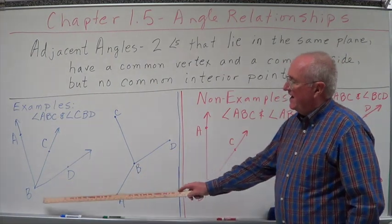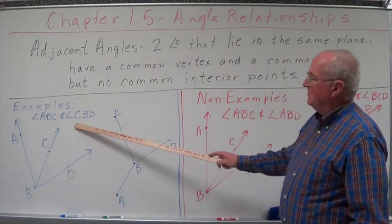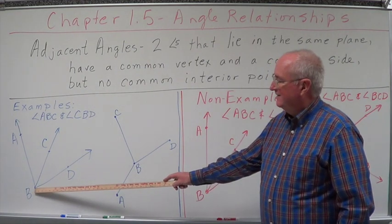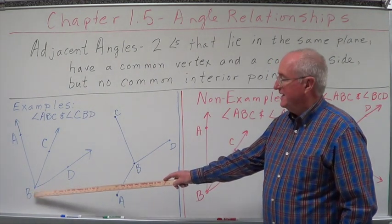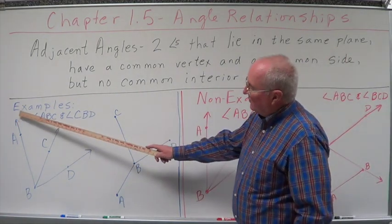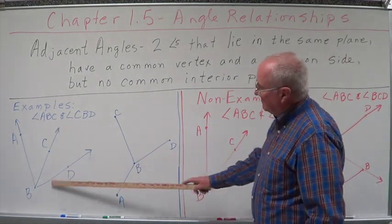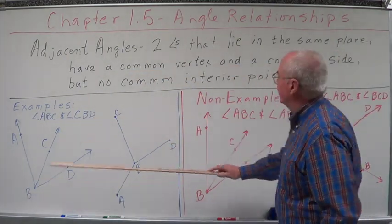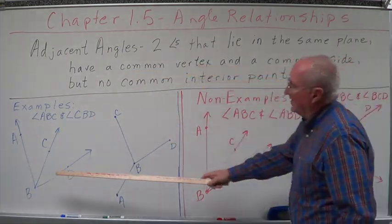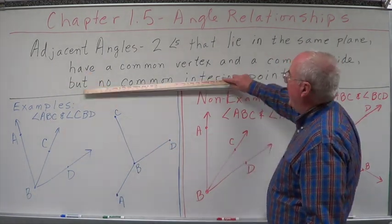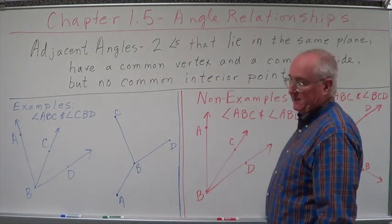Ray BC and ray BD make up the angle CBD. Okay? They have a common vertex at a common point at B. Notice that angle ABC and CBD, they have a common vertex, B, and a common side, ray BC.